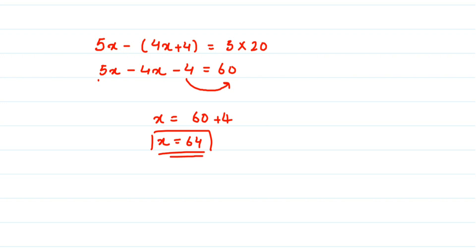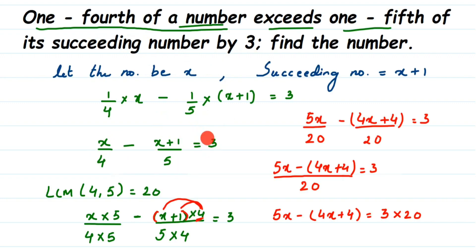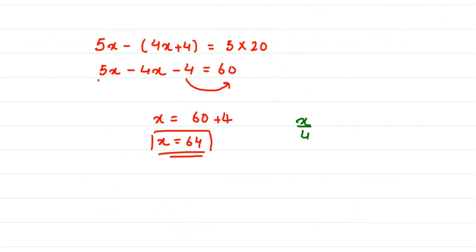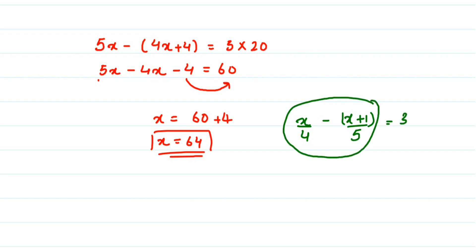So the number is 64. Now if you want to check your answer, you can cross-check by substituting back. We got the equation X by 4 minus (X plus 1) by 5 equals 3. I'm going to substitute the X value of 64 into the left-hand side and see if it equals the right-hand side. It's not necessary but useful to verify in exams.